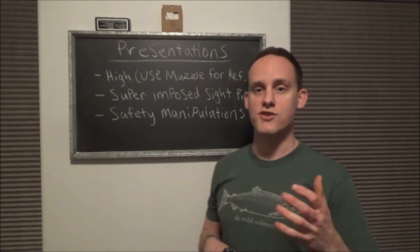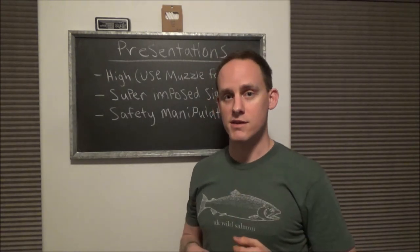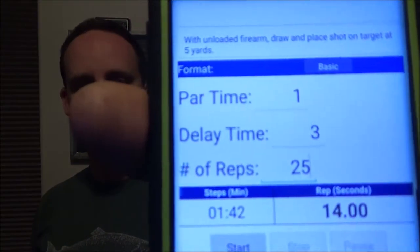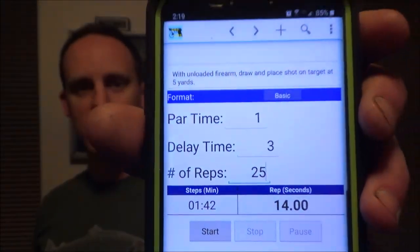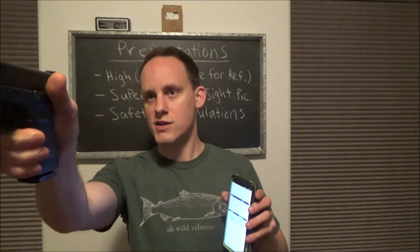Now let's talk about timing. I have my dry fire timer set up for one second. This is something to work up to. If you're working on superimposing your sights, you might want to go like two seconds, snail's pace, working on that transition and coordinating peripherally, getting your sights on.